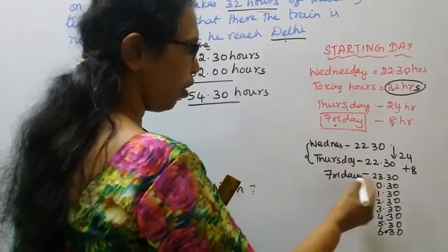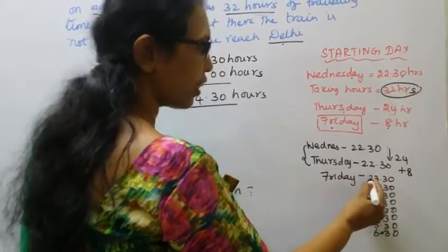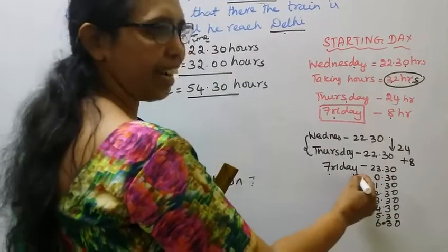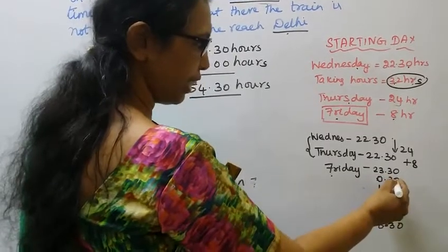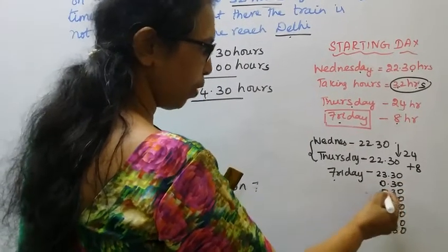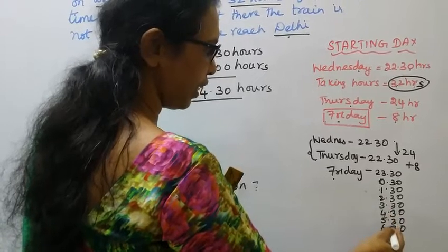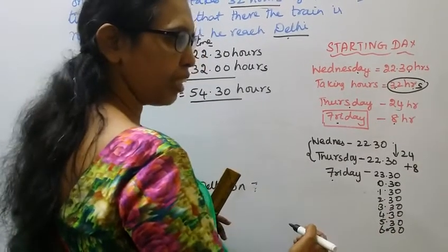Thursday, then 23.30 Thursday. 0.30 - when it becomes 0.30, it becomes Friday. 0.30 is 12.30, right? 12.30, then 1.30, 2.30, 3.30, 4.30, 5.30, 6.30. By then it's 6.30.